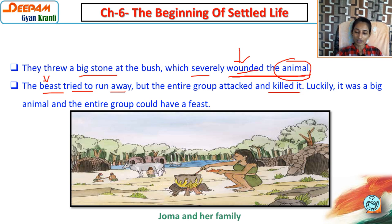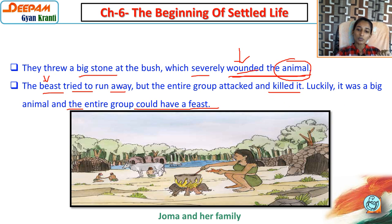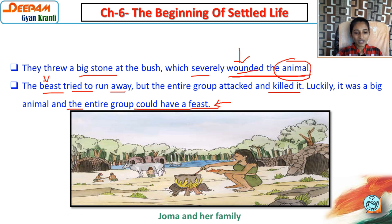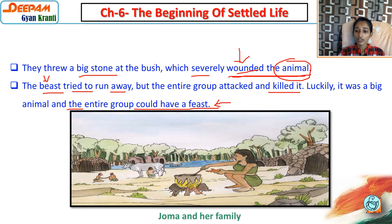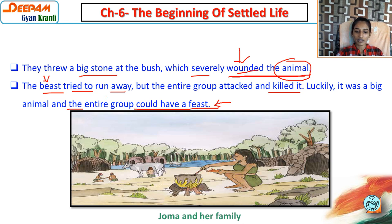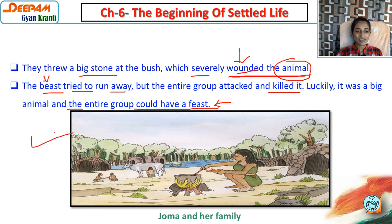The entire group attacked and killed it. Luckily it was a big animal and the entire group could have a feast - 'feast' means a party or food celebration. So the whole group ate together. That was the lifestyle of Gomatu's family.